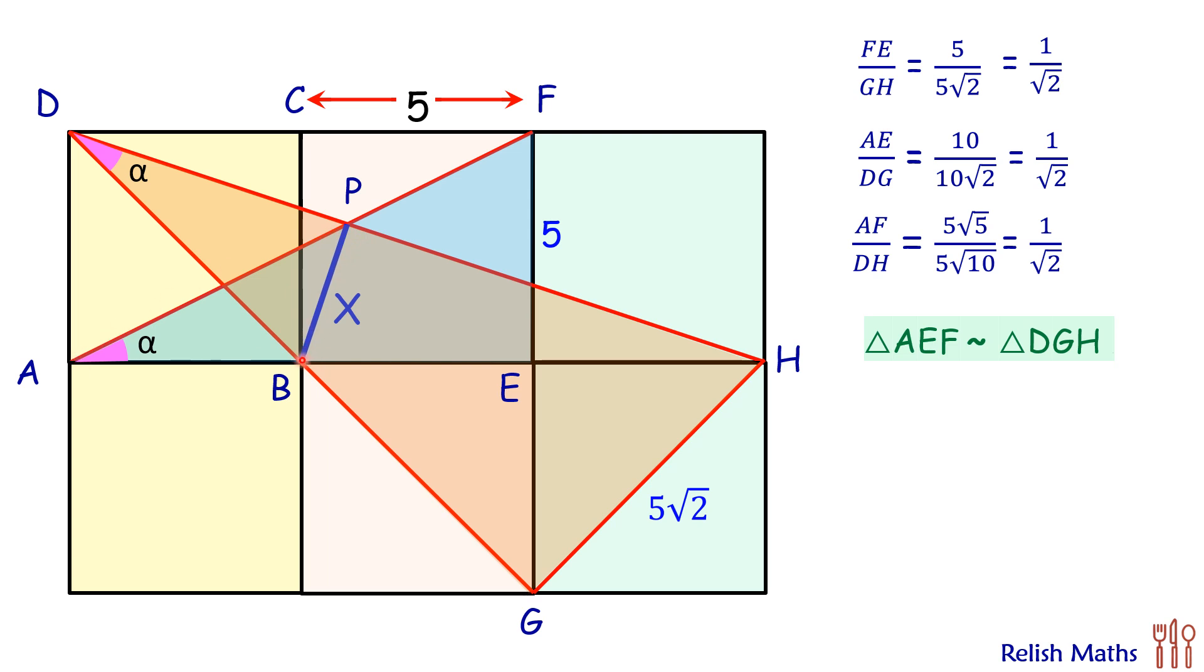Thus we can say that B, P, D, A—all these four are concyclic, or this becomes a cyclic quadrilateral. Now in a cyclic quadrilateral, opposite angles are supplementary. So here this angle A is 90 degrees, and thus the opposite angle, that's this angle P, will also be 90 degrees. So this is the first part which we are proving.